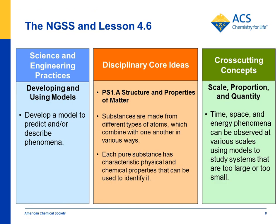Looking at the foundation boxes: students develop a model to describe phenomena — here they're developing a model to describe covalent and ionic bonding. The disciplinary core idea is that substances are made from different types of atoms and each pure substance has characteristic physical and chemical properties. Students use Lewis dot structures to show that, and also that time, space, and energy phenomena can be observed at various scales — here students use models that look at electrons in the outer energy level to show how atoms come together to form molecules.